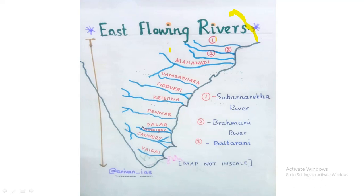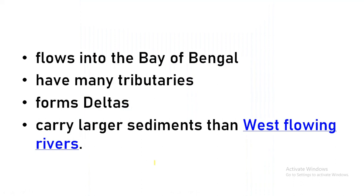East flowing rivers flow into the Bay of Bengal. West flowing rivers flow into the Arabian Sea. Comparatively, east flowing rivers have larger sediments, very big deltas and tributaries. The first river is Damodar River — the Sorrow of Bengal. It rises in Palamu Hills of Chota Nagpur Plateau.